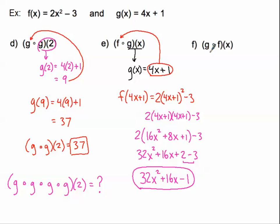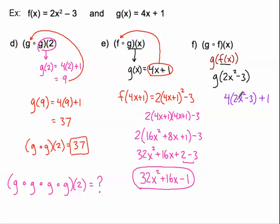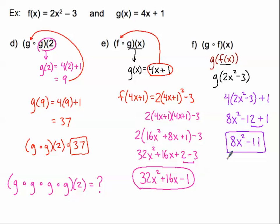Let's go backwards — instead of f of g, let's do g of f of x. We're going to take the entire f of x function, which is 2x squared minus 3, and plug it into the g function. The g function says to take 4 times the input and add 1. So 4 times the quantity 2x squared minus 3, plus 1. It's a quick distribution: 8x squared minus 12, plus 1, which combines to 8x squared minus 11.